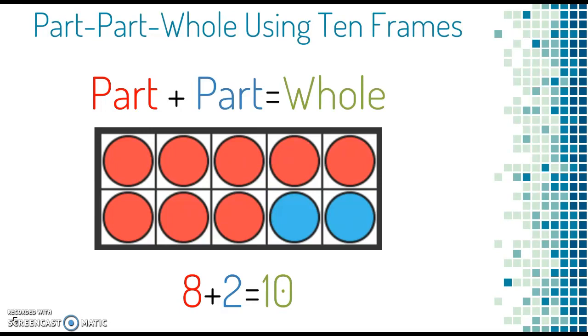Like this, where we represented some of the 10-frame counters in red and some in blue. So in this example, there are 8 red and 2 blue to have a total of 10. So one part red, one part blue, and the whole is all together.